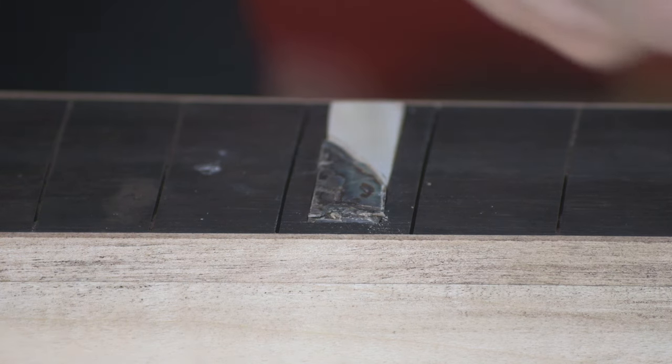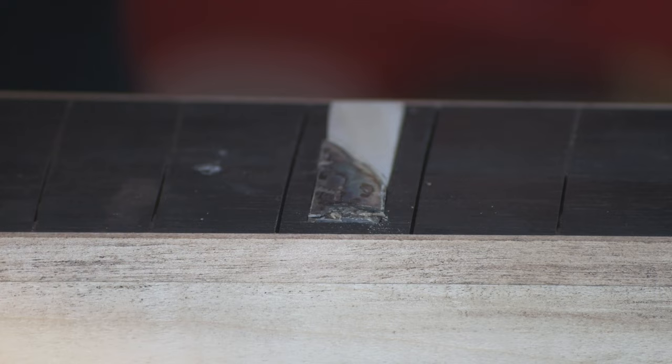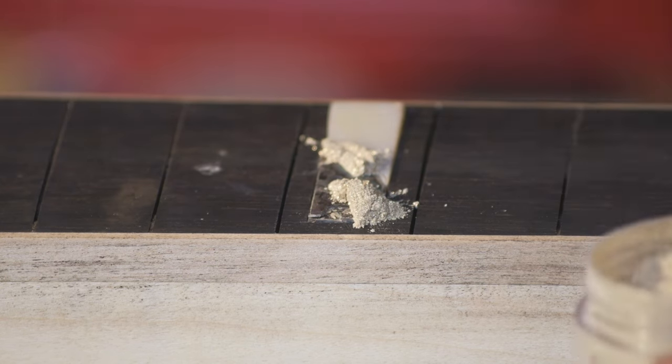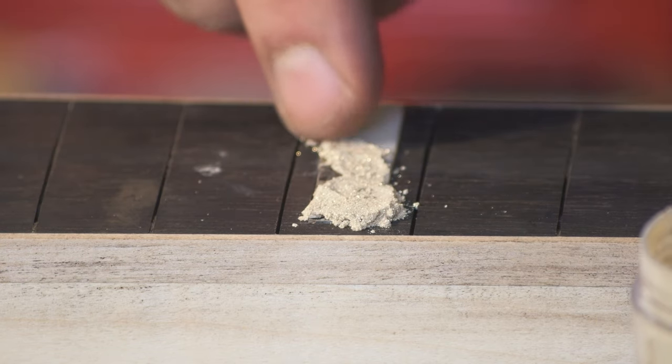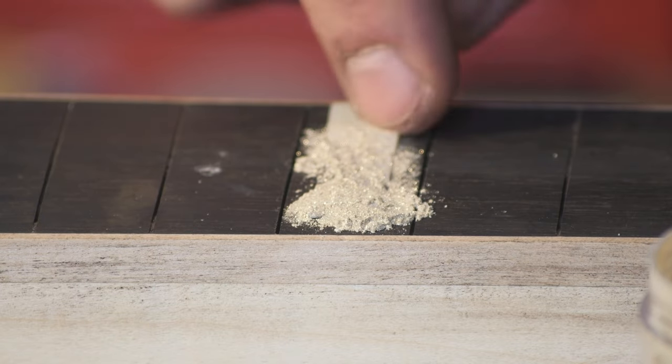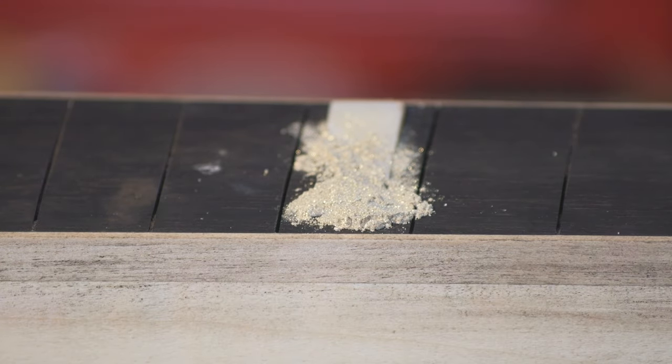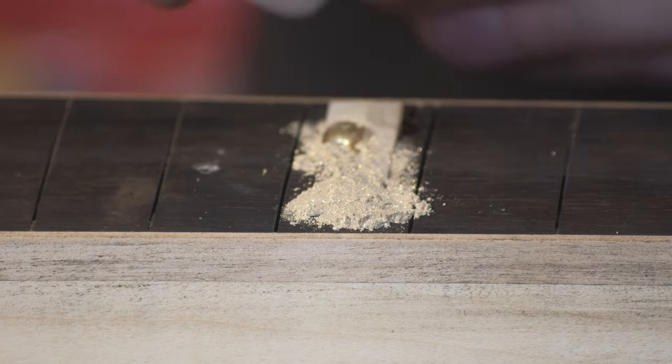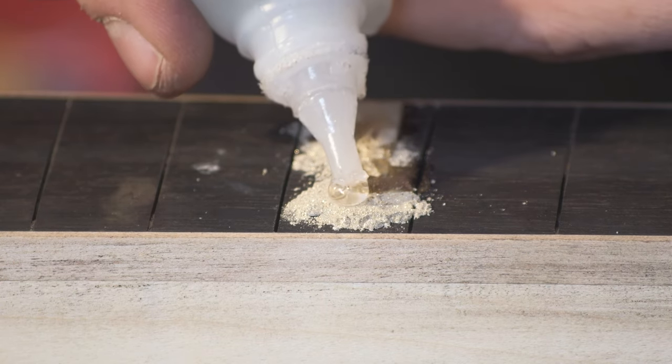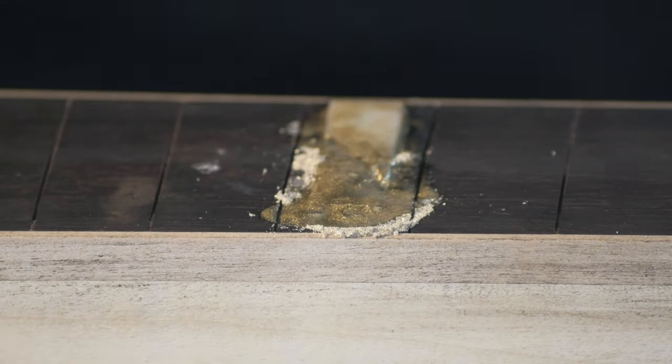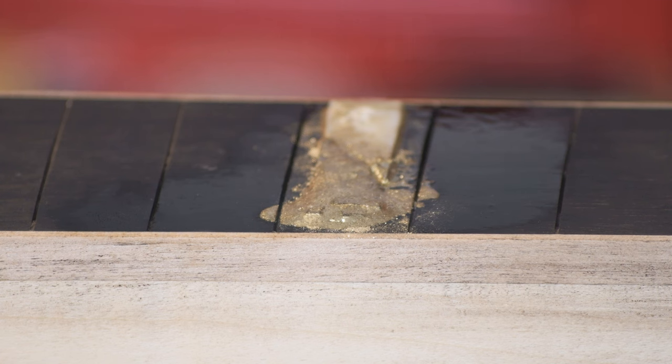All right, so now we're gonna sprinkle on some gold powder, which is brass powder basically. Just to kind of cover all broken portions, hopefully. I have no idea how this is gonna work or if it's gonna work, but we're gonna try it. And then we're gonna pour over some glue.